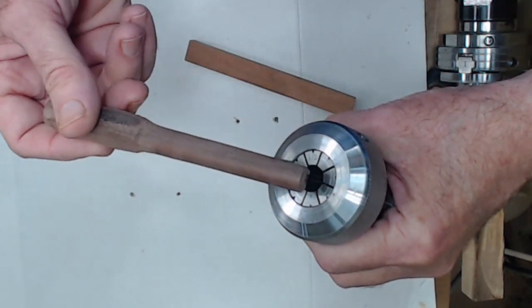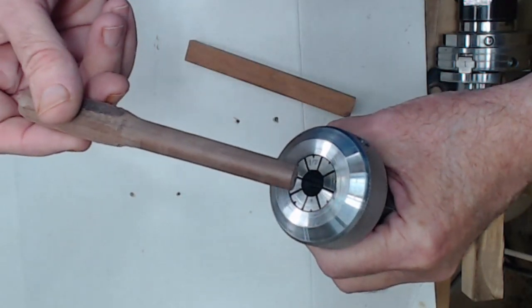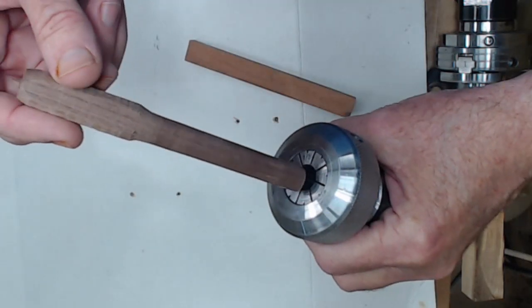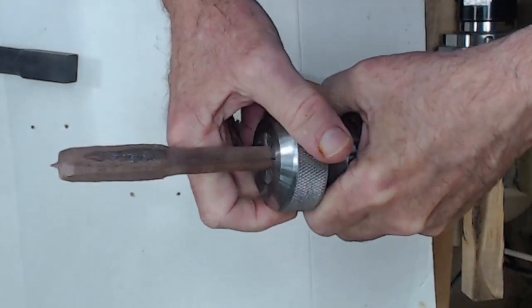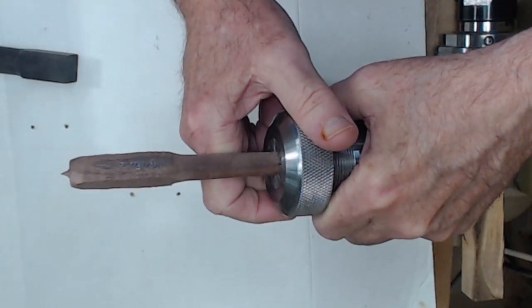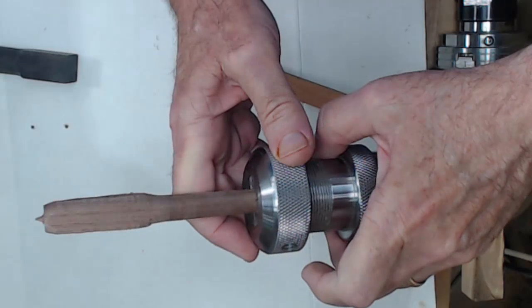It comes in I think a quarter inch, three eighths inch, a half inch, five eighths and three quarters. And it holds very securely. So those are all different ways you can turn those small items.